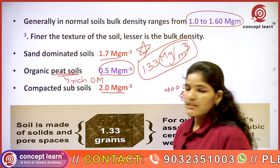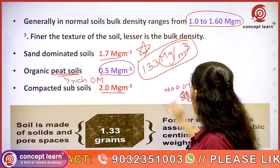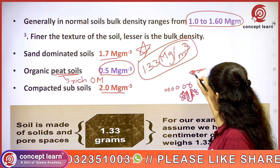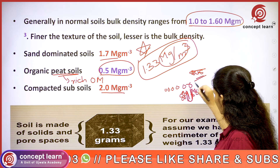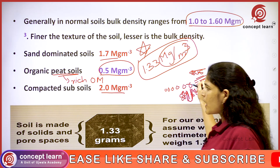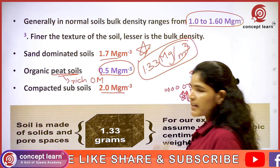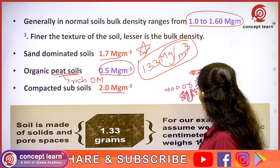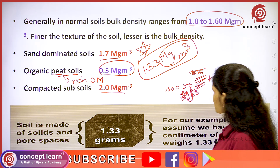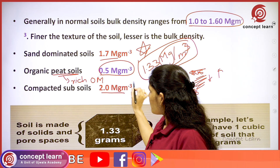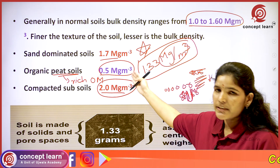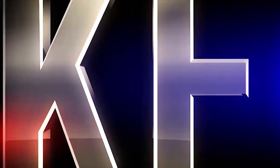Compacted soils have less pore space, so density is more. Compacted soils have more density compared to normal or organic soils. These values — 0.5 for peat, 1.33 for normal, and 2 megagram per meter cube for compacted subsoils — are very important.